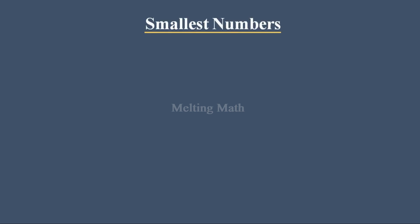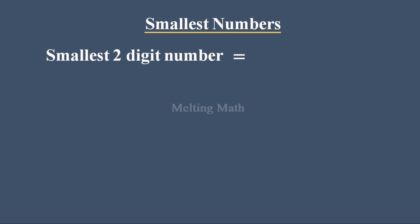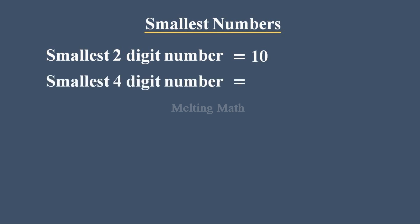Next we are going to see about smallest numbers, with questions from this chapter. First: smallest two-digit number. Here they asked the smallest number and it is a two-digit. Just write the first digit as 1 and the remaining one digit as 0, so 10 is the smallest two-digit number. Similarly, for the smallest four-digit number: write first digit as 1 then 3 zeros — this number has 3 zeros so it comes under thousand.